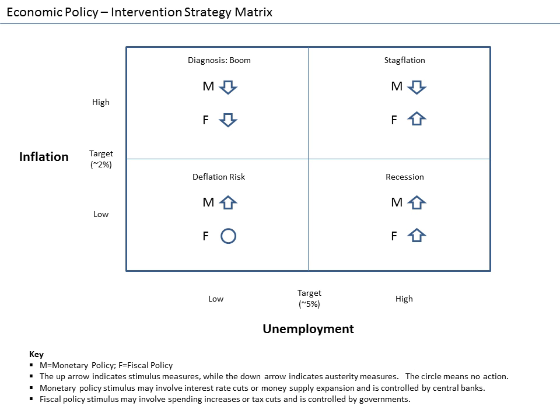Unemployment can be generally broken down into several types that are related to different causes. Classical unemployment theory suggests that unemployment occurs when wages are too high for employers to be willing to hire more workers. Other more modern economic theories suggest that increased wages actually decrease unemployment by creating more consumer demand.